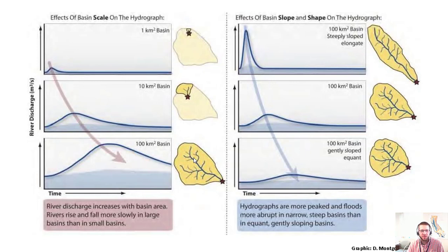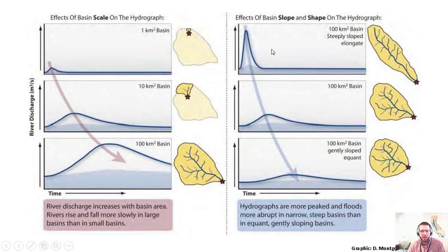Different watersheds have hydrographs with different shapes. Basin size affects the hydrograph — a small watershed has a small peak flow with a short time of concentration, and as basin size gets bigger, the peak gets bigger and the time of concentration increases. Basin slope and shape also matter: a steeply sloped, elongated basin will have a short time of concentration with a high peak, while a more diffuse, flat basin produces a lower peak discharge and longer time of concentration.